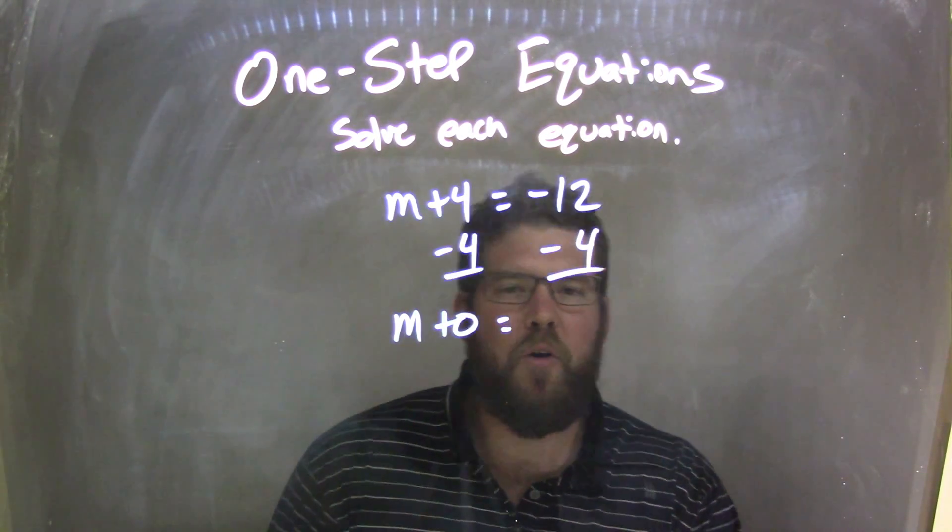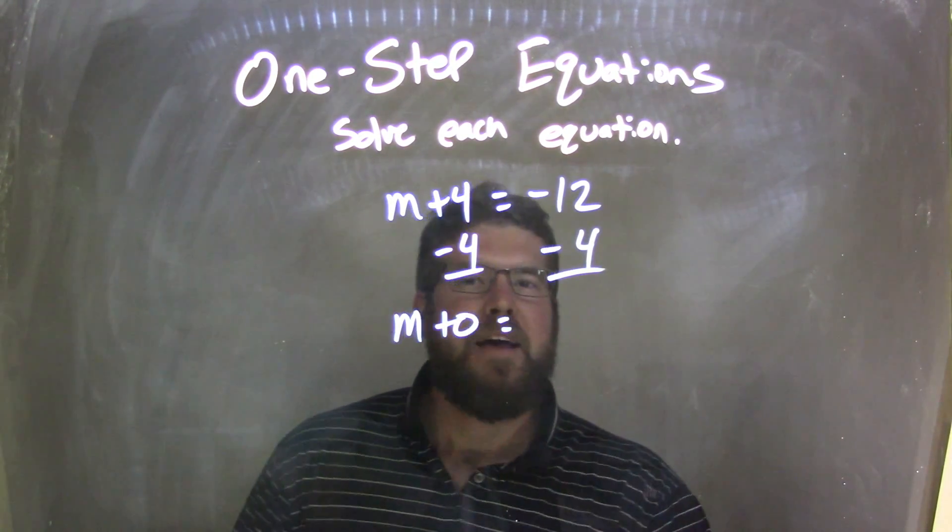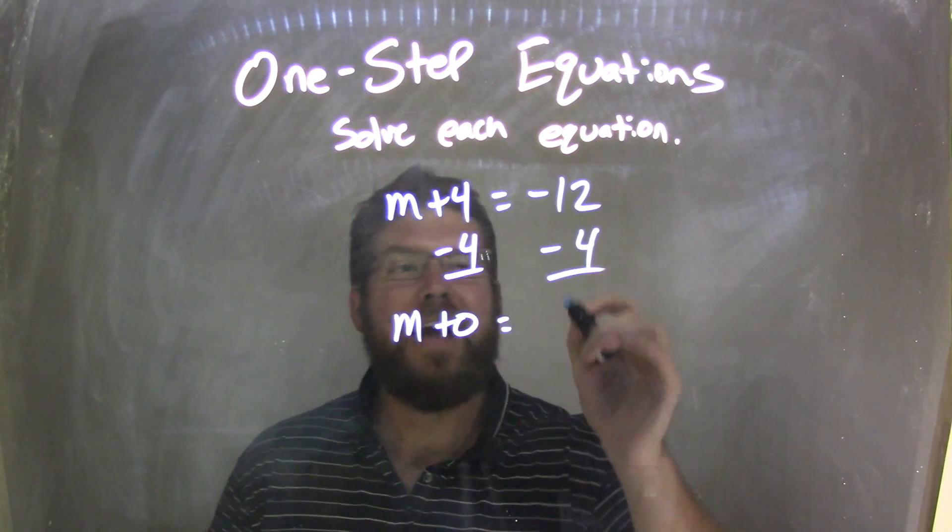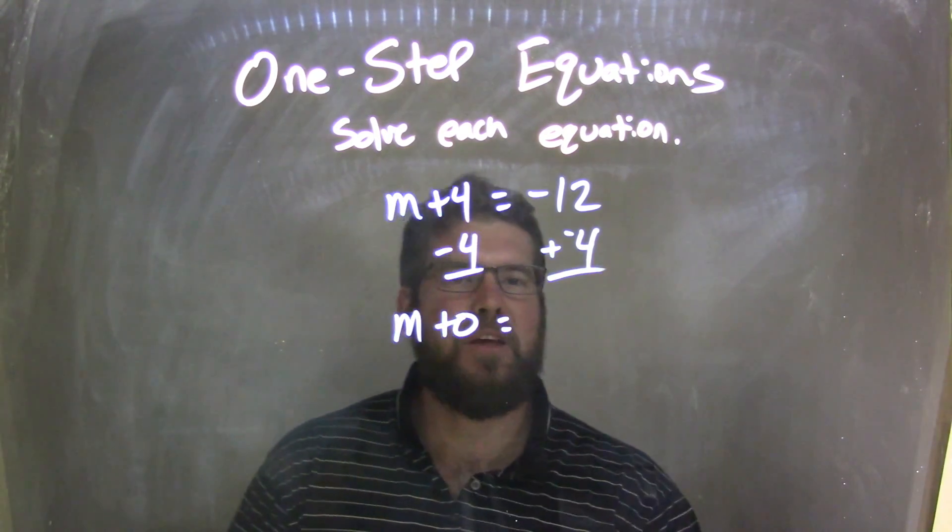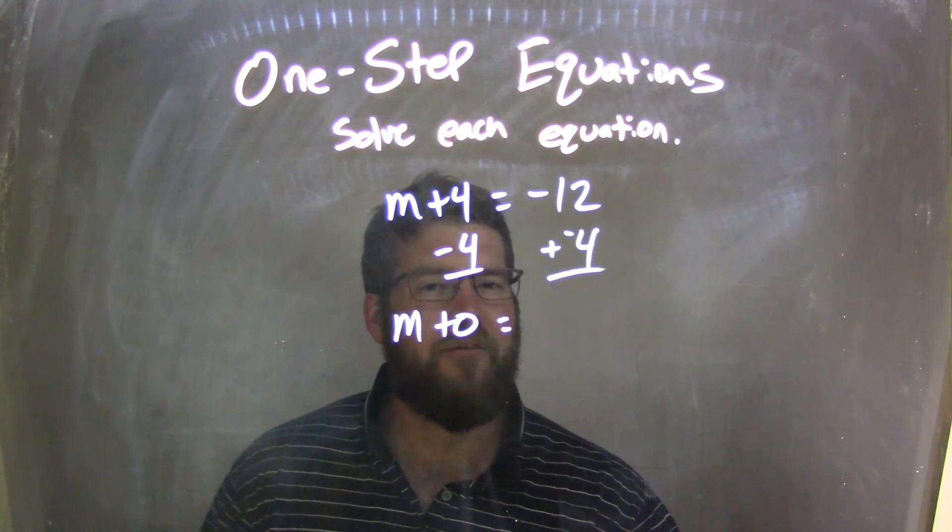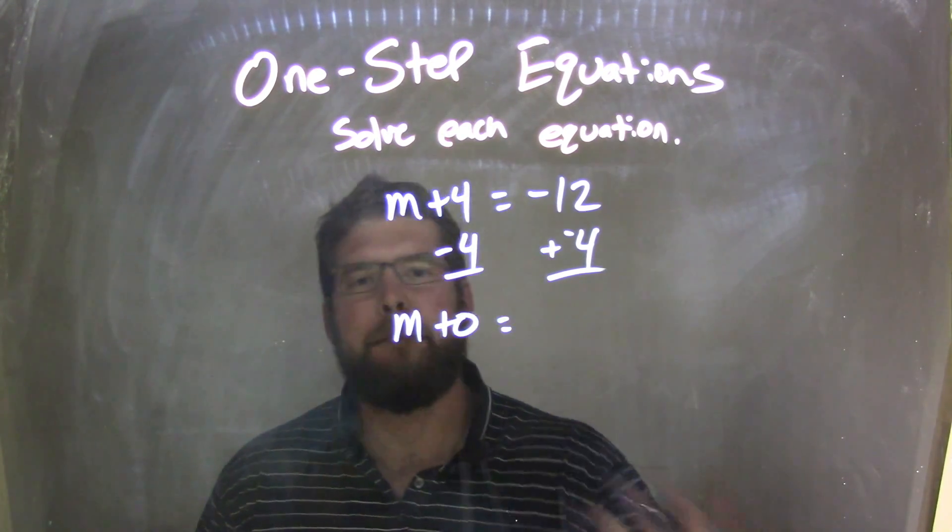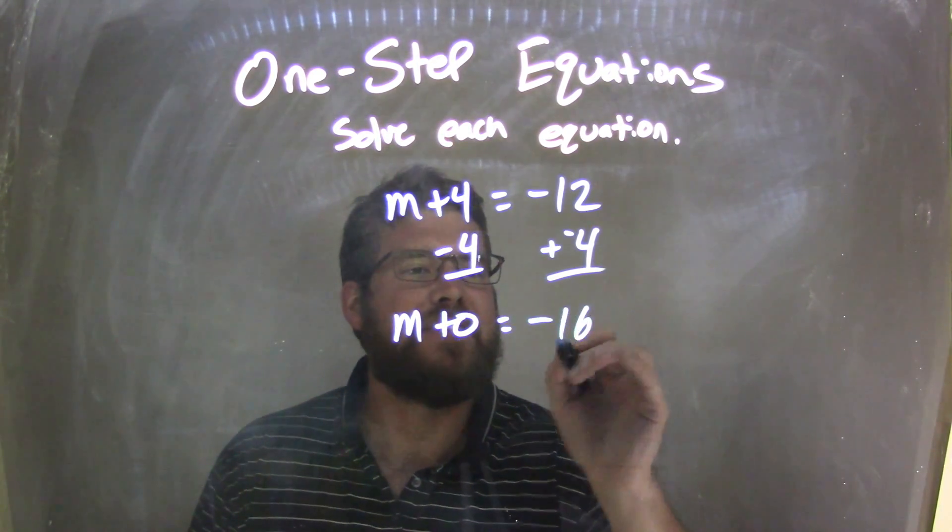But now we have negative 12 minus 4. Sometimes, you know, subtraction is the same thing as adding a negative, right? You can kind of see that there. So, negative 12 plus a negative 4 makes it more negative, which is negative 16.